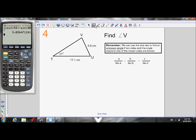So if I ask you to find angle V, I remember that we can use the sine law to find an unknown angle if two sides are known and the angle opposite one of the sides is known.